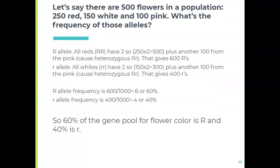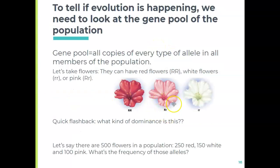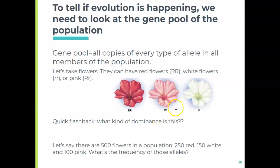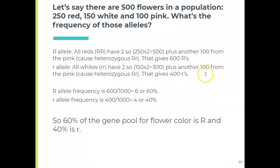Let's do the math. All the reds are RR, so 250 times 2 is 500 big R's. Each pink flower has one big R, so 100 more — giving 600 big R's total. All whites are rr, so 150 times 2 is 300 little r's, plus 100 from the pinks, giving 400 little r's. Out of 1000 total alleles, 600 are big R and 400 are little r — so allele frequency is 0.6 and 0.4, or 60% big R and 40% little r.